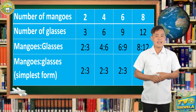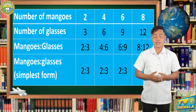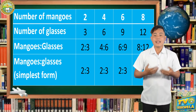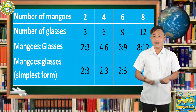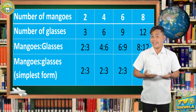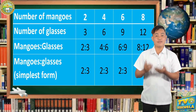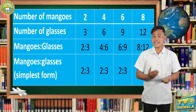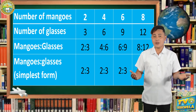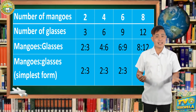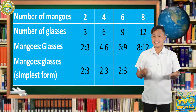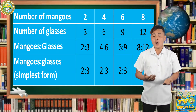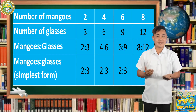Next, in every 4 mangoes, we can produce 6 glasses of mango shake. The ratio is 4 is to 6. In simplest form, we have 2 is to 3. Next, in every 6 mangoes, we can produce 9 glasses of mango shake. Its ratio is 6 is to 9. In simplest form, we have 2 is to 3.